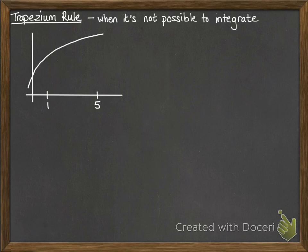Now imagine you've got a curve like this, and you want to find the area under the curve between 1 and 5, and it's some sort of function we don't know how to integrate. So what we would do is we'd approximate it to a trapezium, like this.